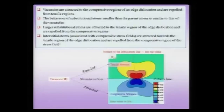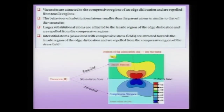Now let us start with the interaction of vacancies with the stress field of the edge dislocation. In the figure below you can see the sigma_xx stress field around an edge dislocation. The dislocation line is into the plane of the board right at the center. The entire half space above is tensile in nature and the entire half space below is compressive in nature.